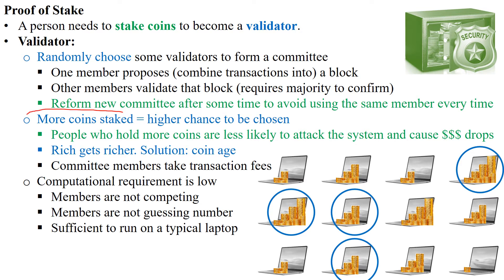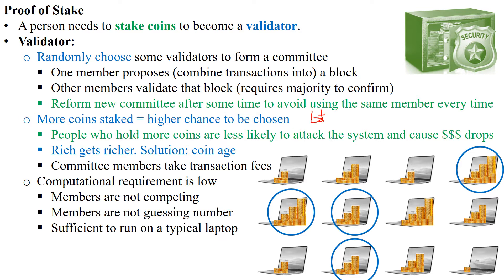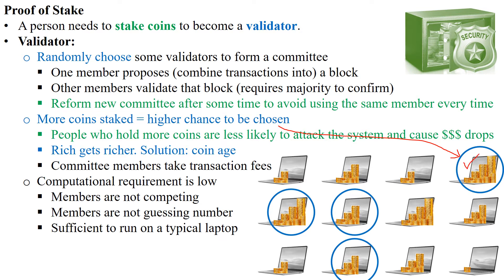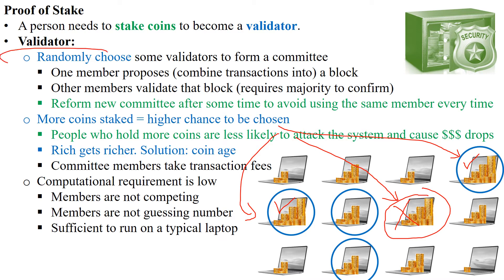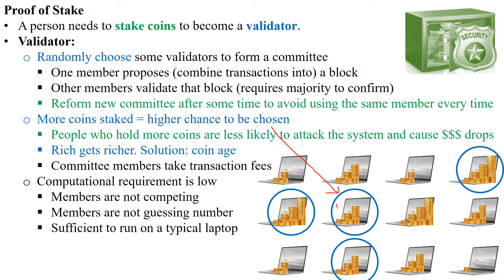In proof of stake, if you have more coins staked, you have a higher chance of being chosen as a validator. You can think of it as a lottery system — if you buy more lottery tickets, you have a higher chance to win. Looking at the picture, the person who staked more coins — who bought more lottery tickets — is chosen as the validator. However, this is still a random system; someone with fewer coins can also be chosen over someone with more.